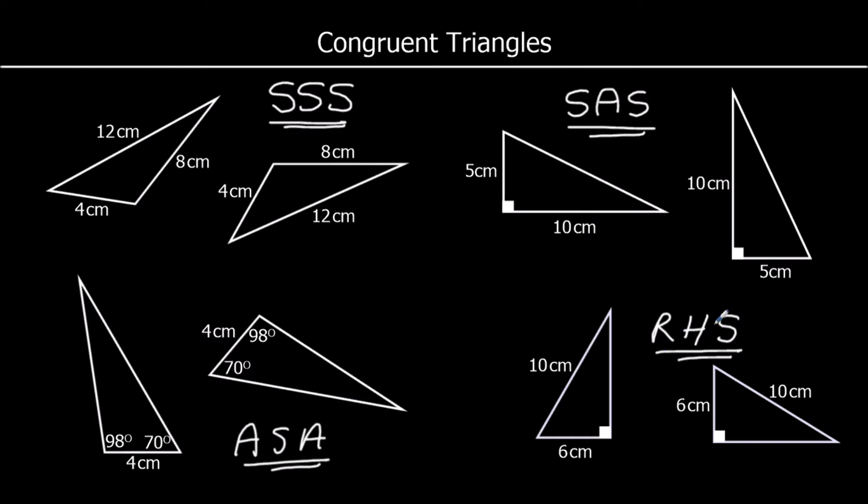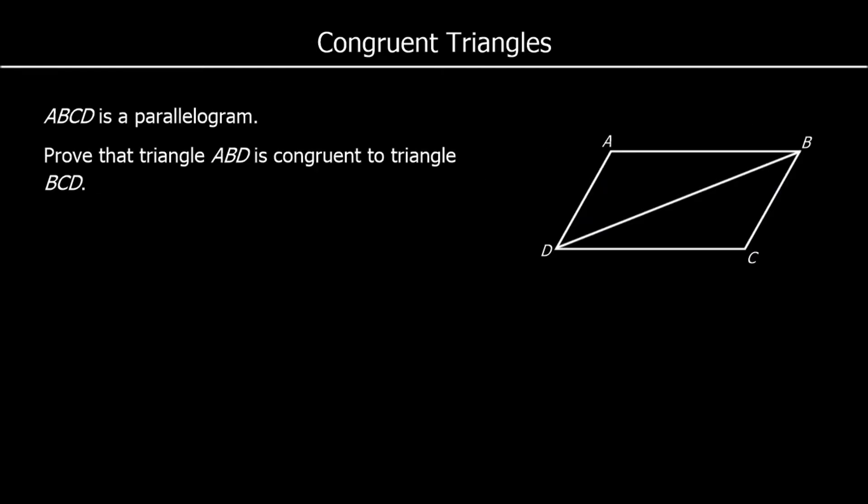Or we've got a right-angle triangle and the hypotenuse and one other side are equal. You'll notice Angle Angle Angle is not one of these rules — if all three angles are the same, the triangles would be similar, but one could be an enlargement of the other.